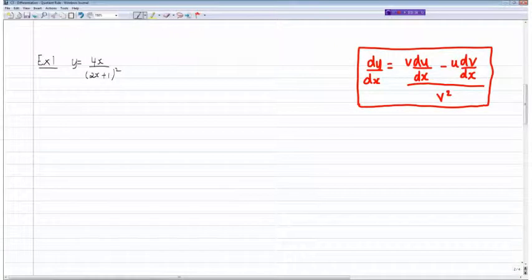So what's the first thing we do here? The first thing is we say we put u is equal to the top function 4x and we say v is equal to the bottom function which in this case is 2x plus 1 all squared.